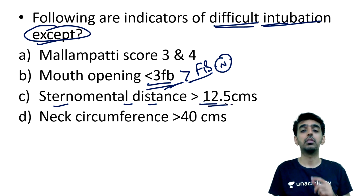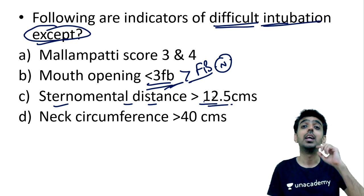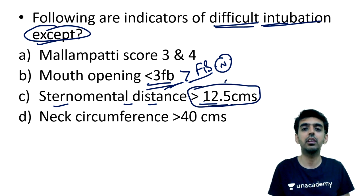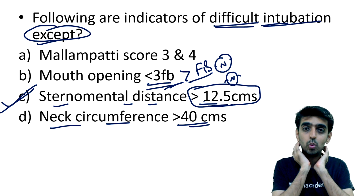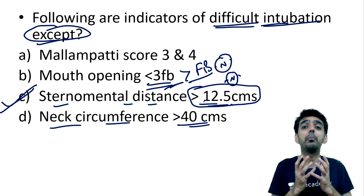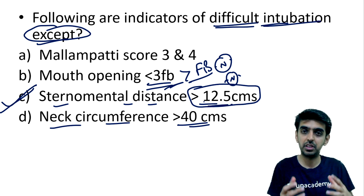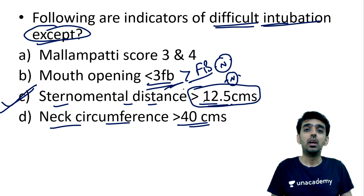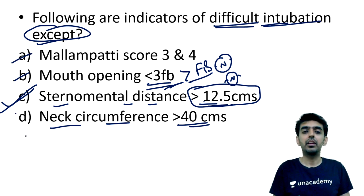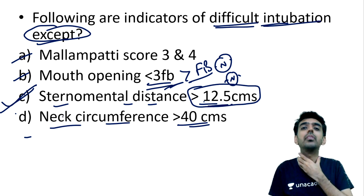Sternomental distance — measured from the mentum of the mandible to the sternum — if it is more than 12.5 cm, that is a normal value. If it is less than 12.5 cm, it becomes a difficult intubation. So 'more than 12.5 cm' is the correct answer here as it is not an indicator of difficulty. Neck circumference of more than 40 cm — seen in obese patients — makes both ventilation and intubation difficult.